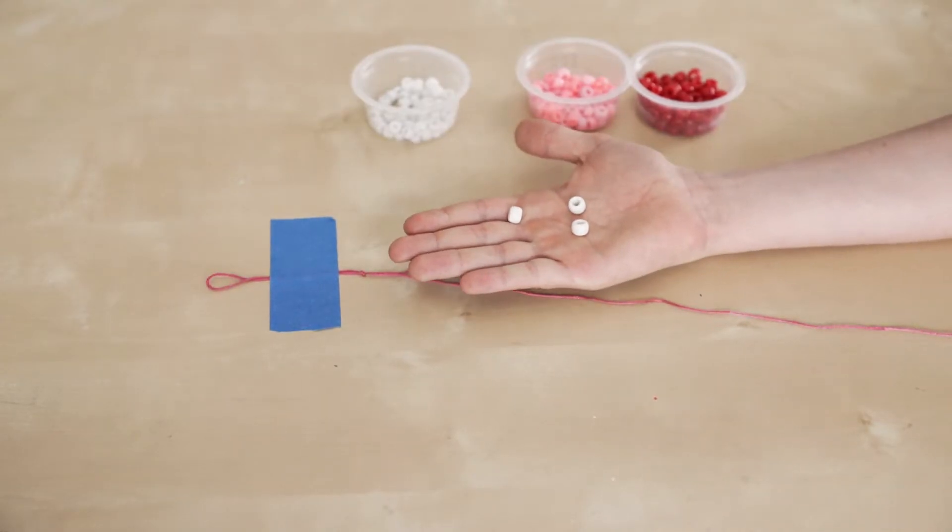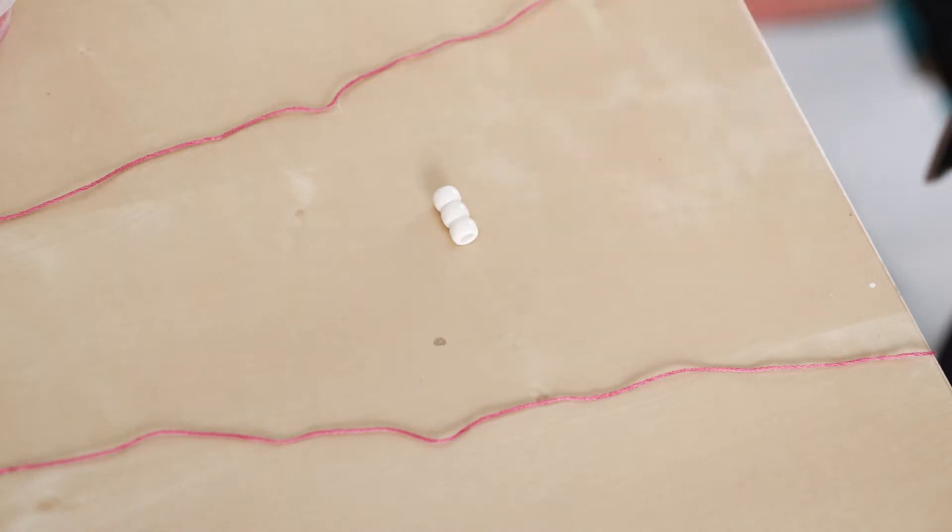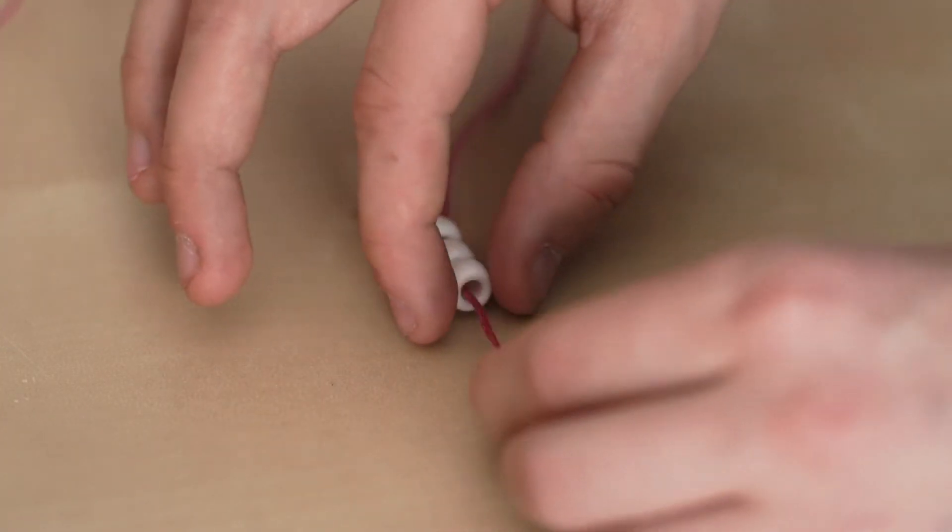I'm going to use three beads for each section of our bracelet. If you want a wider bracelet, use more. Line up your beads with the holes facing outward. Take one side of your embroidery floss and stick it through each of the holes.